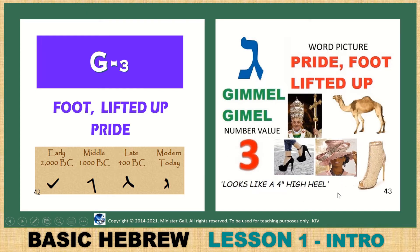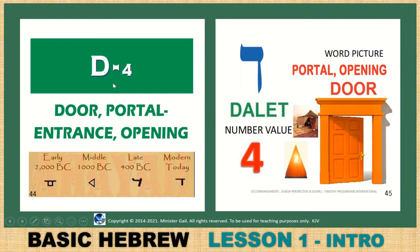D — Dalet, the fourth letter: door, portal, instant, entrance, or opening. The original shape looked like a tent door hanging on a tent. Around 1000 BC it looked like the portal for the third eye, and today it has a little edge on the back — a door edge, portal, door opening. Value of 4. This is the third eye, the pyramid — the top of a pyramid, a portal to the sunlight, worship to the sun god.